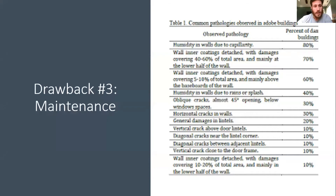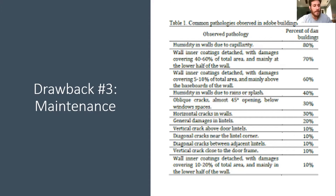Another drawback is the maintenance associated with building with adobe. Most concerns have to do with water intrusion and cracking of bricks over time — whether you're replacing, repointing mud mortar, supporting walls, replacing entire bricks, or adding plaster to the interior and exterior over time. There's a larger associated maintenance cost than with more traditional engineered products.